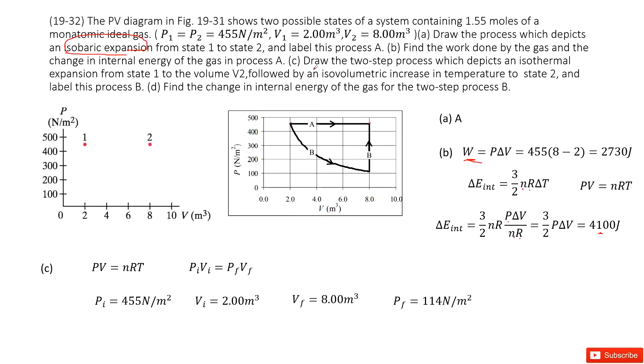So C part asks you to draw the two-step process, which tells you isothermally, the temperature will not change from 1 to 2. So from 1 to 2, the temperature will not change. So this is a curve, as we learned in our textbook. And then, it followed by isovolume. So this one, the volume is a constant, increased to the origin point. So this part is B.